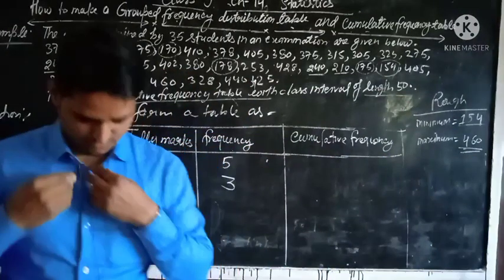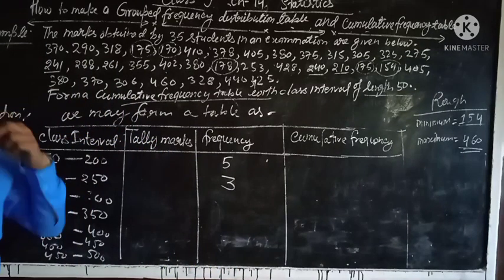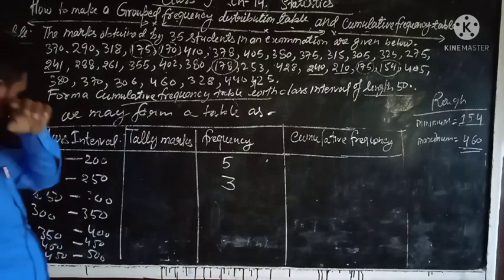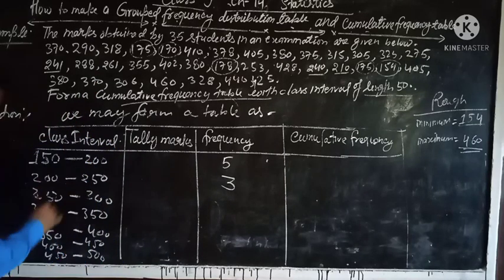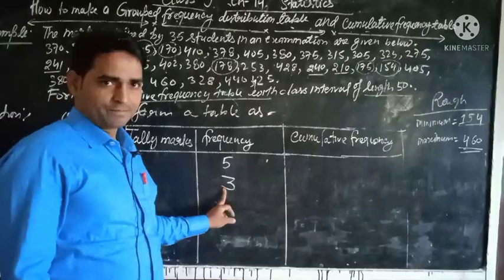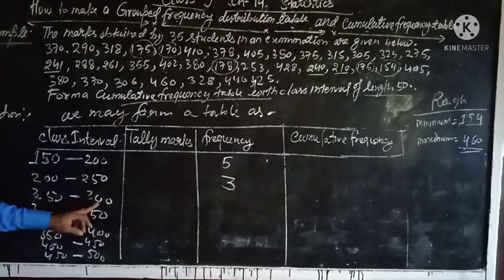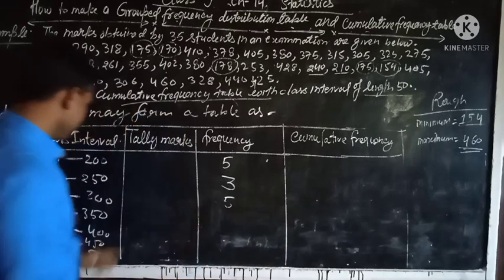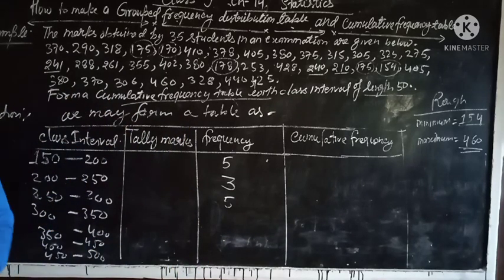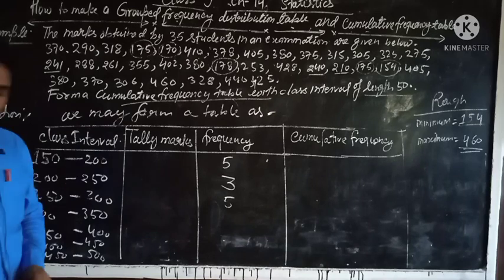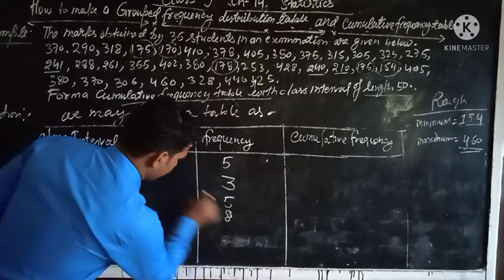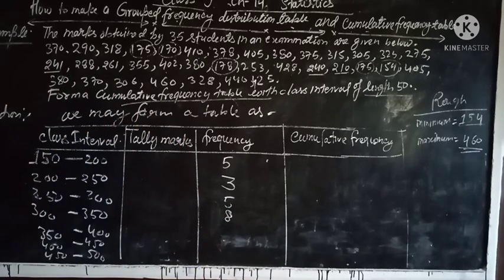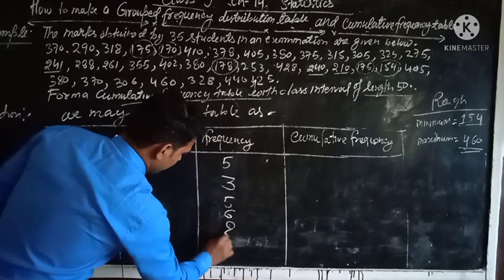Okay, now you see here the data. For 250 to 300, the frequency is 3, and for 300 to 350, it's 5. This is the frequency. Next, the frequency of the data 300 to 350 is 6 and then 8.